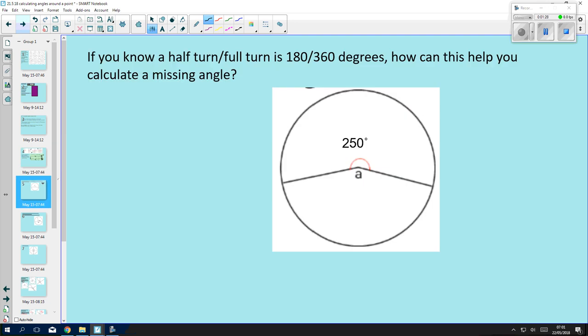So if you know that a half turn is 180 degrees and a full turn is 360 degrees, how can this help you calculate a missing angle? It's not about being able to measure the angles with a protractor, it's using what you already know to help you calculate. If we know that a full turn, this full circle, has four right angles, that helps us understand that it's 360 degrees in total.